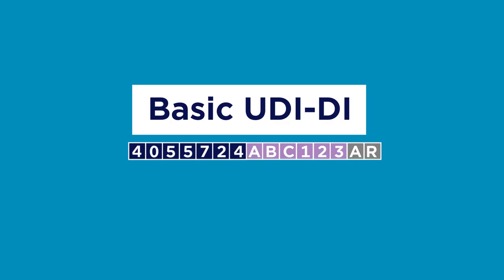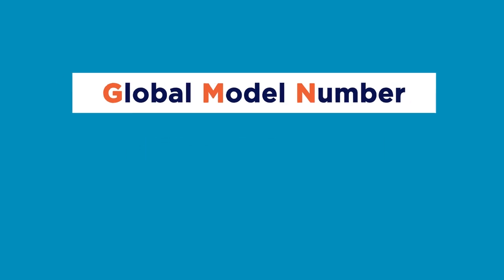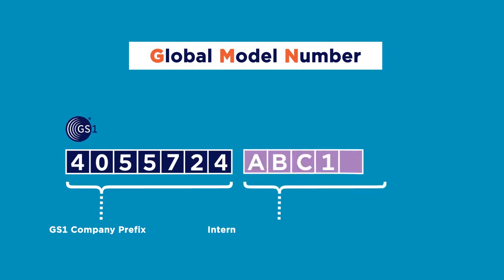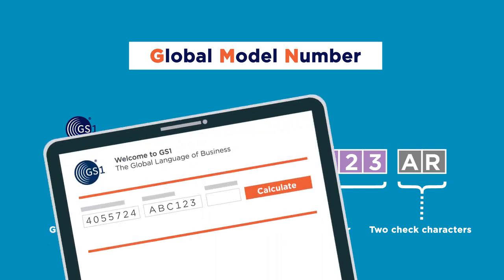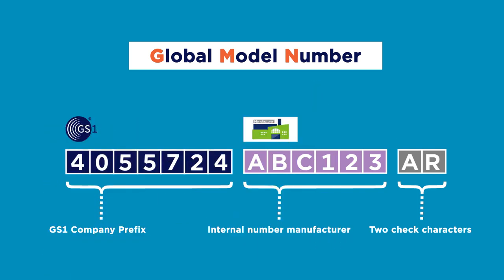Now let's see how you can build the basic UDI-DI with GS1 standards. The GS1 global model number, abbreviated GMN, is a GS1 key which allows the creation of a basic UDI-DI. The first part is the GS1 company prefix, which is uniquely assigned to a GS1 member company. The manufacturer internal number for that group of devices follows, which is assigned directly by the manufacturer. At the end of the GMN there are two check characters, which can be generated using the GMN calculator.